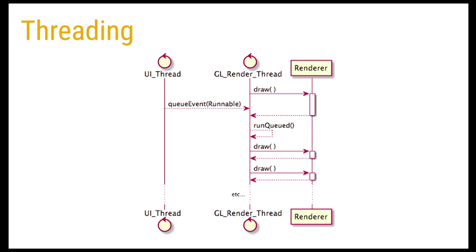Quick note on threading: the renderer is running on its own dedicated GL rendering thread. You have the same kind of challenges as with the UI thread — if you want to communicate with your renderer, you need to go through something like queueEventRunnable or some other threading mechanism, so that you can get reliable draw calls at your 60 frames per second.